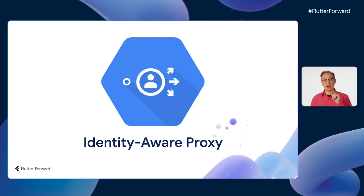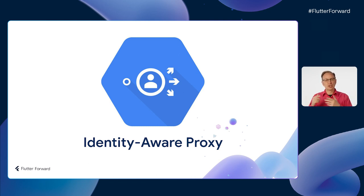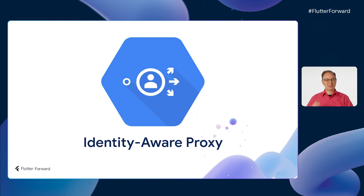For the second scenario — a company's internal app where the list of employees is the list of all possible users — I recommend Google Cloud's Identity Aware Proxy, or IAP for short. IAP is a configurable piece of middleware that sits between your users and your actual web service and handles authentication against a known list of users. Like Firebase Authentication, it allows all of your company's employees to sign in using their existing corporate account, without a cumbersome sign-up process.